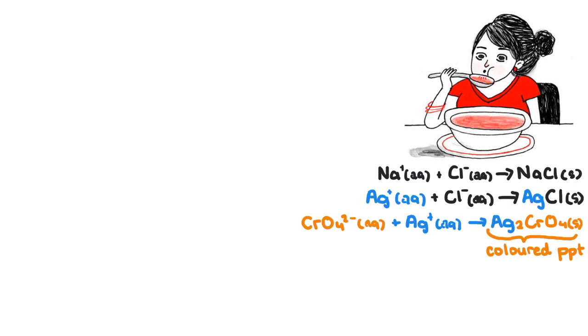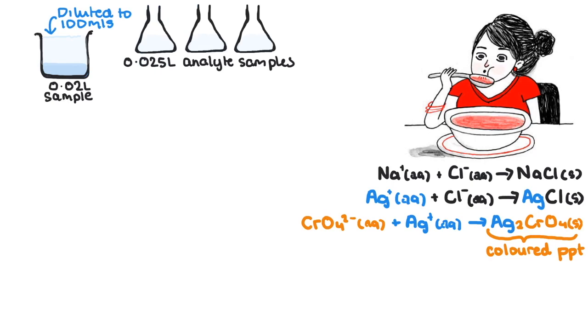So your soup is too salty, so you take out a 20 ml sample of it and dilute it to 100 ml. We'll put that to the side. In your bag you take out your titration equipment and prepare 25 ml samples of the soup.